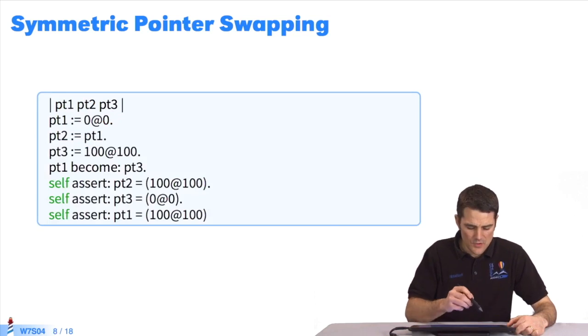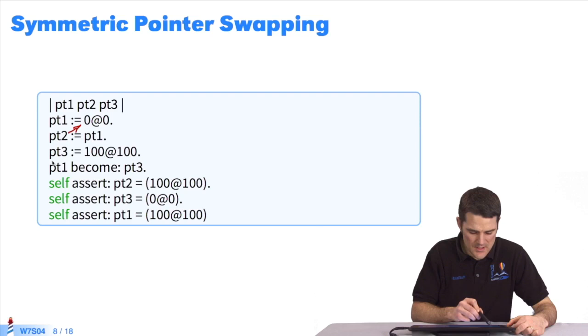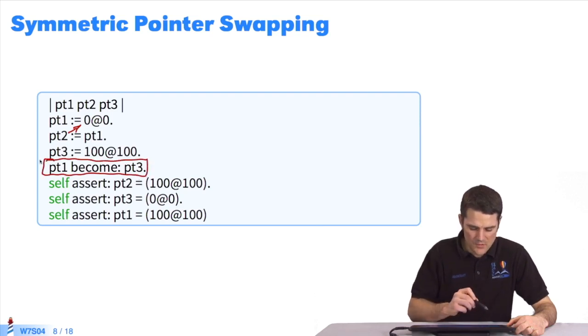Here's an example. I create a point 1, which points to the object point 0@0, and a variable point 2, which also points to the object 0@0, plus a variable point 3, that points to the point 100@100. Then, I write the primitive point 1 become point 3.